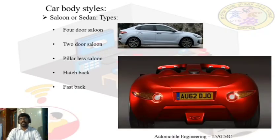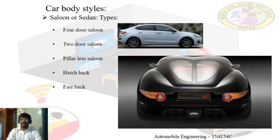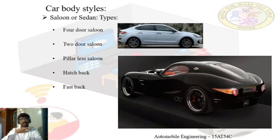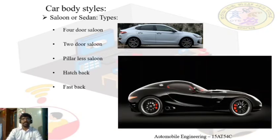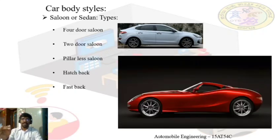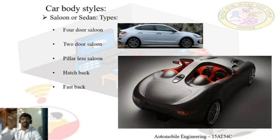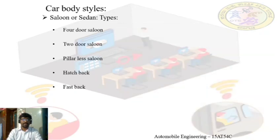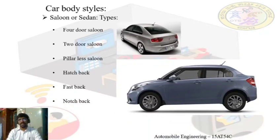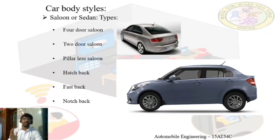The fastback has a sloping or smooth curved roof line going from the top of the vehicle right to the end of the vehicle body. In between there is a hinge provided so that we can open that particular door to keep luggage. In the notchback, you can clearly distinguish the boot space from the roof — the roof has a sharp curve, and after that there will be a separate boot space. This is called a notchback.